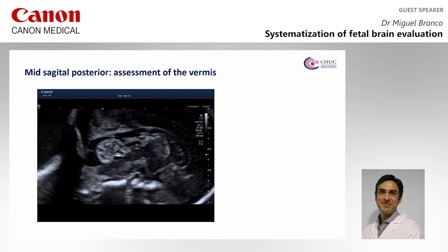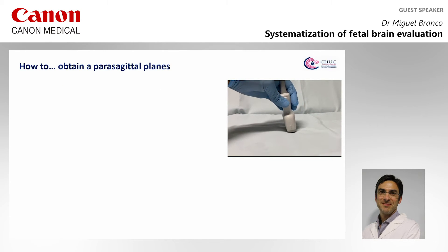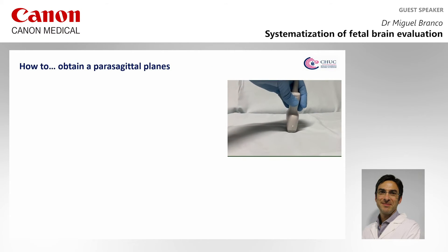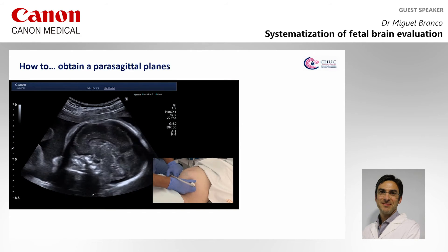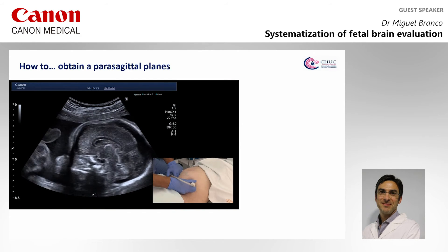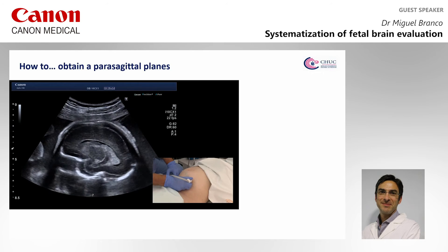Also from the posterior fontanella, we can study the posterior fossa with the vermis, fourth ventricle, and the choroid plexus. If we tilt the probe slightly, we will obtain the perisagittal planes from the sagittal planes.